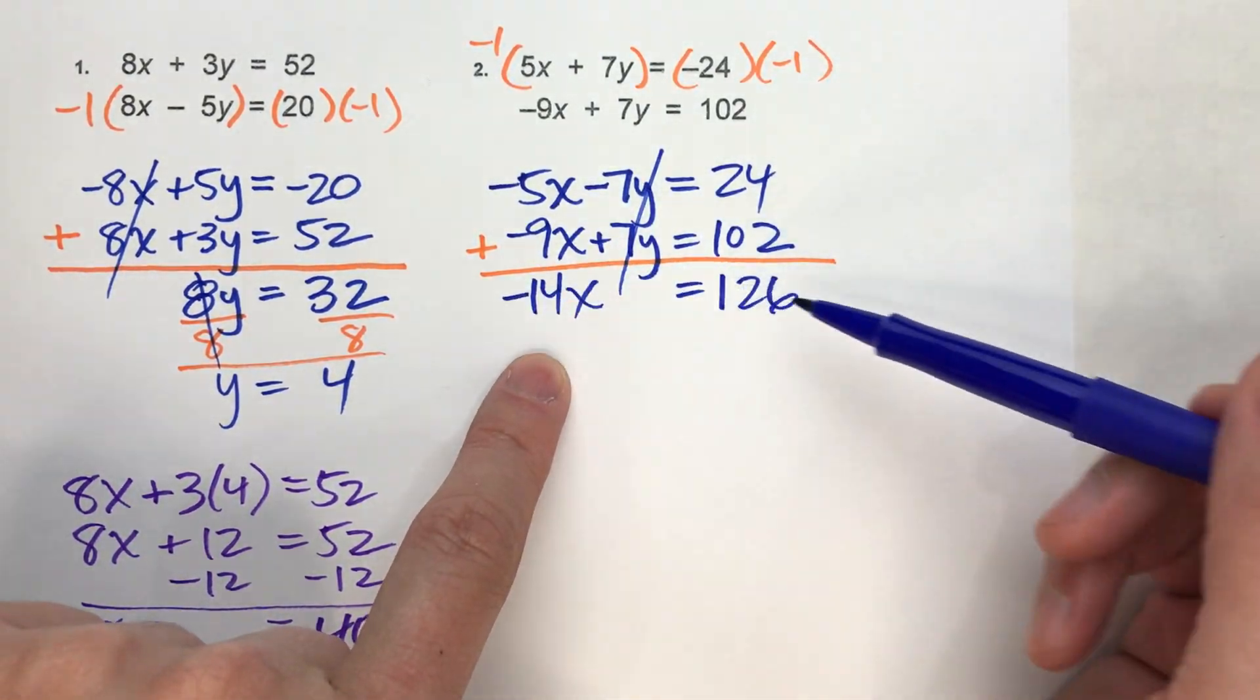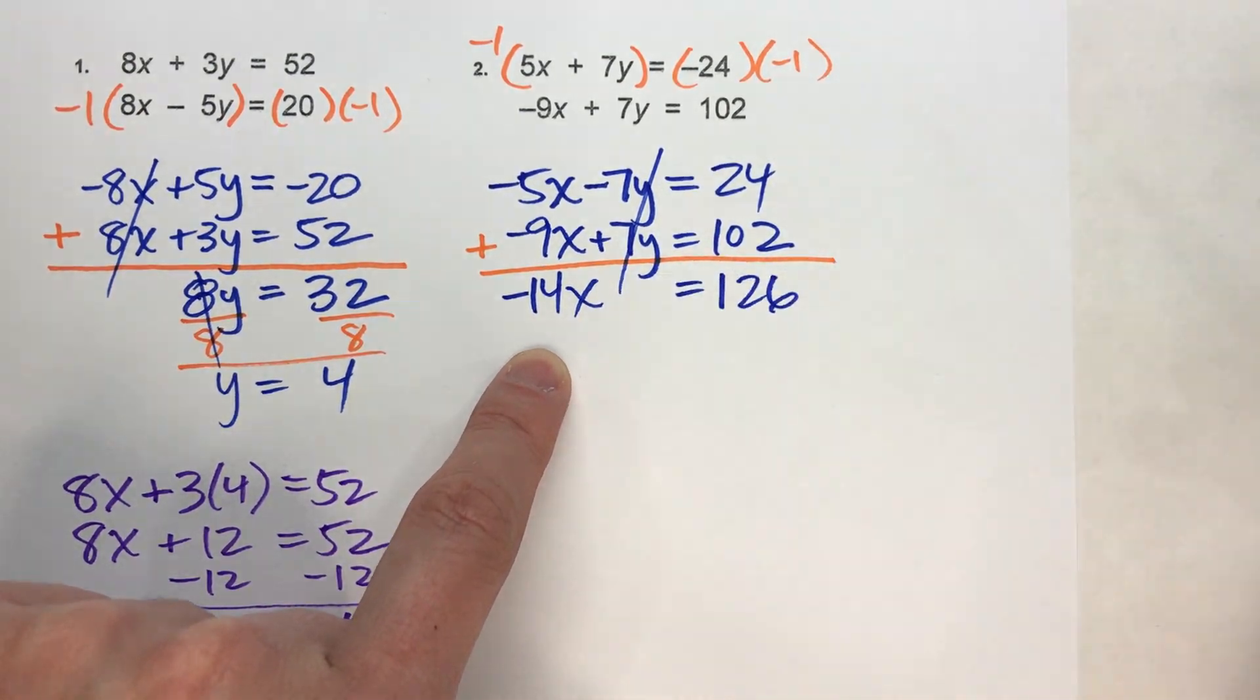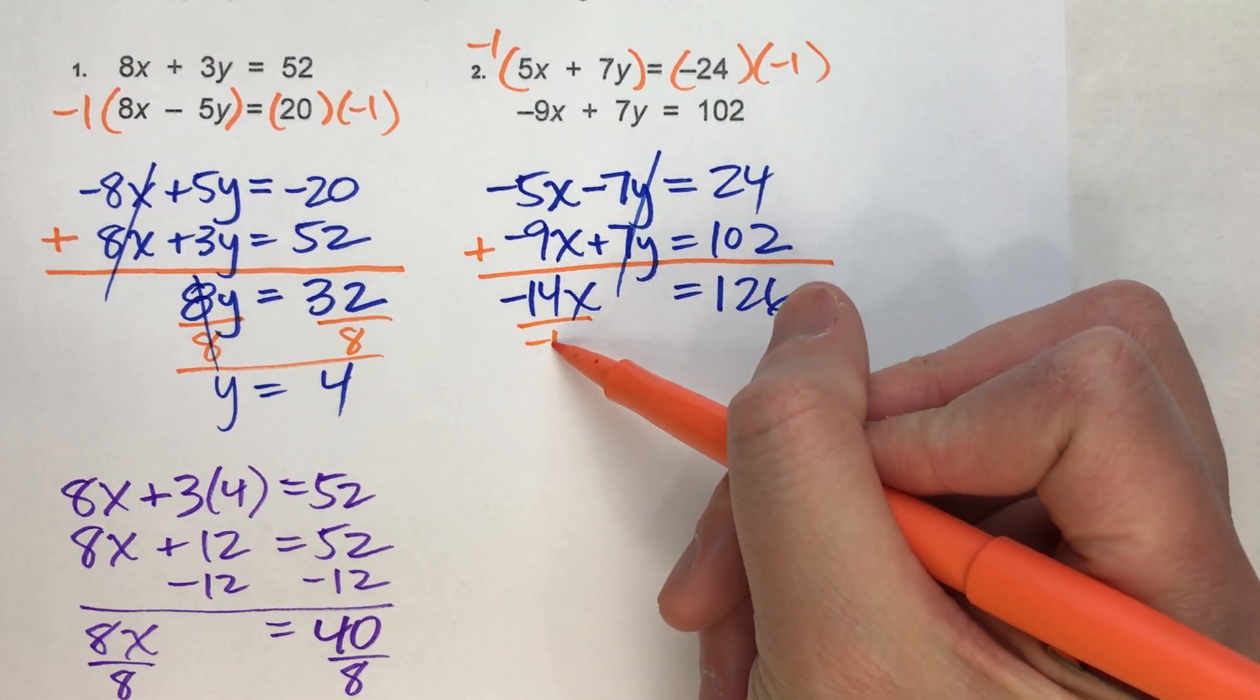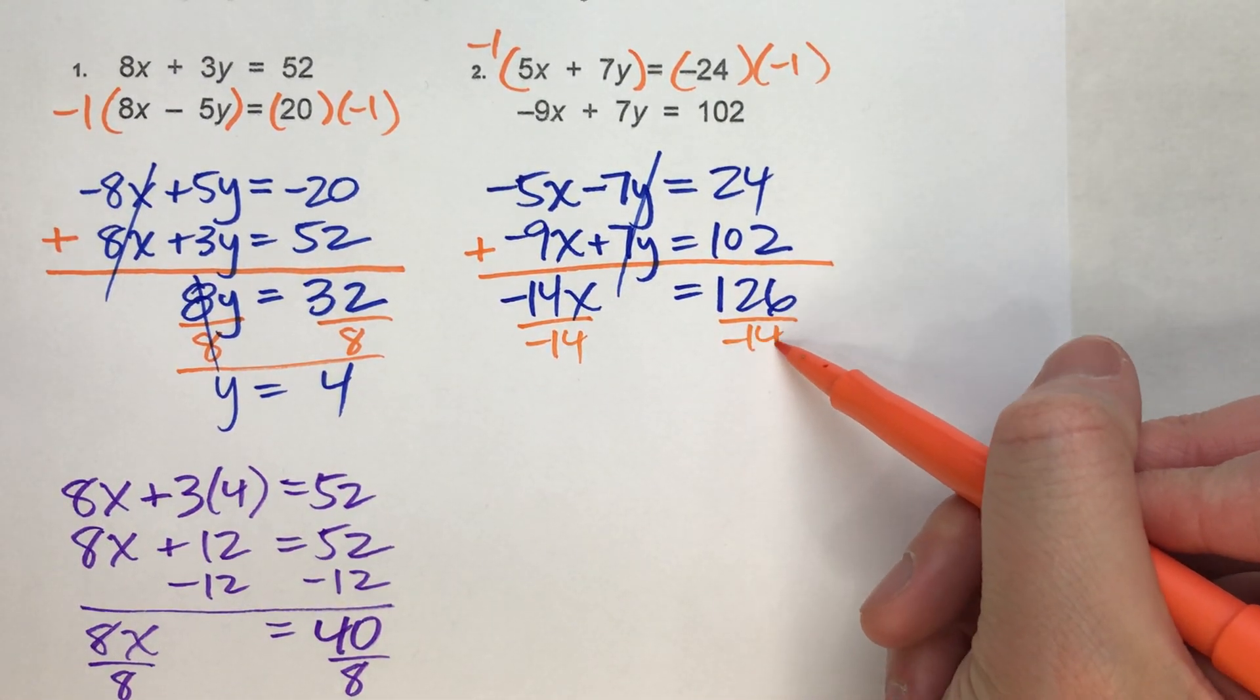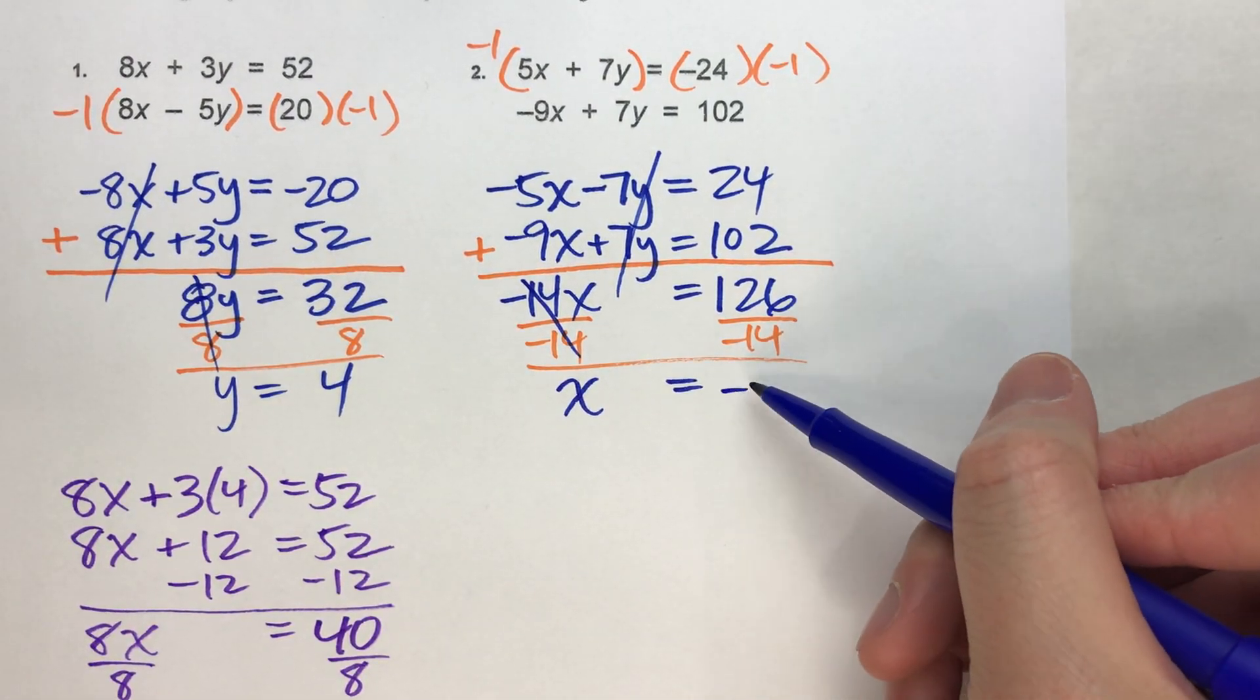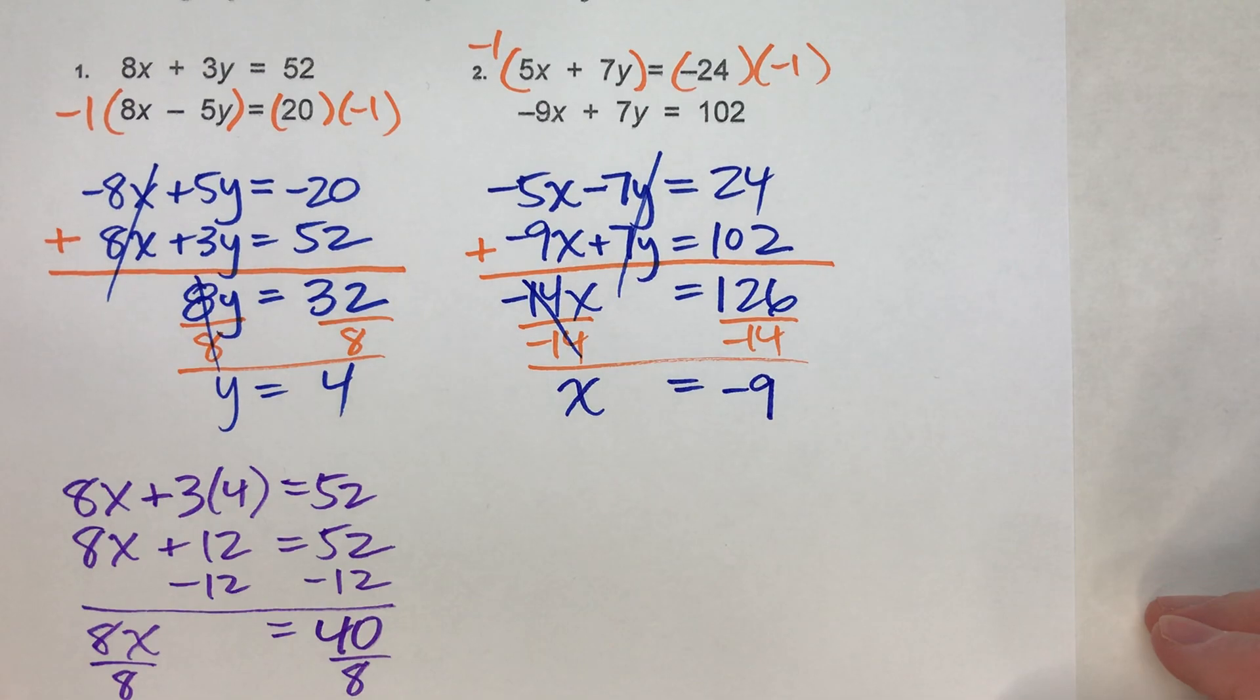And 24 plus 102 is 126. And again, I've completely eliminated one of the variables. And now I can easily solve for x. So to solve for x, I'm going to divide both sides by -14. When I do that, I get x equals, and this is -9.